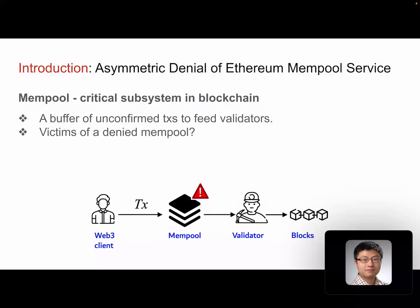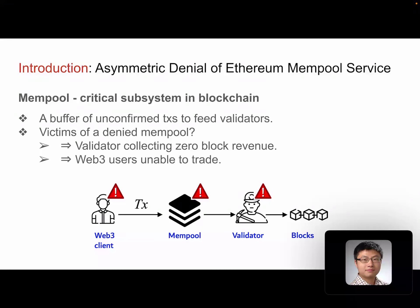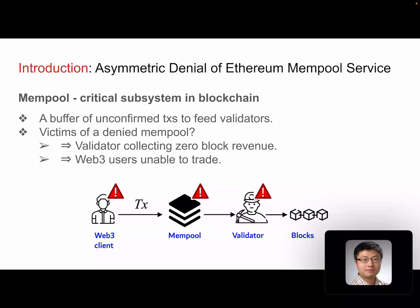If the memory pool service is denied, there will be a couple of victims. Validators will not be happy because they will be left with an empty memory pool and zero transactions to build in the next block. This means their revenue will become zero, and in the long run they lose their incentive in participating in block validation — that will shrink the blockchain network and reintroduce a 51% attack. On the other end, Web3 users will not be happy because their transactions will not be included in the blockchain on time, or may not be included forever. This has a definitely negative impact on their applications such as DeFi, which is usually time sensitive.